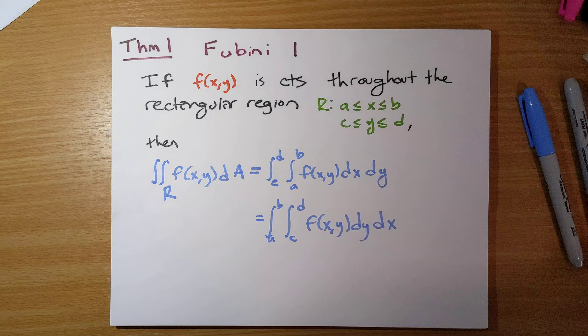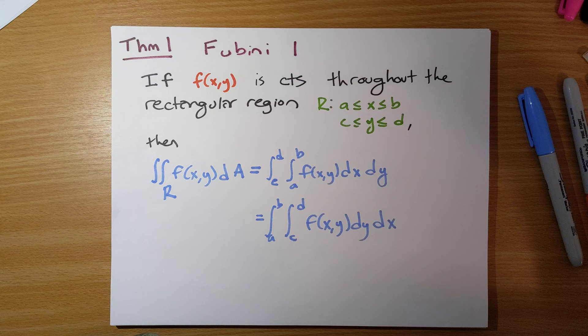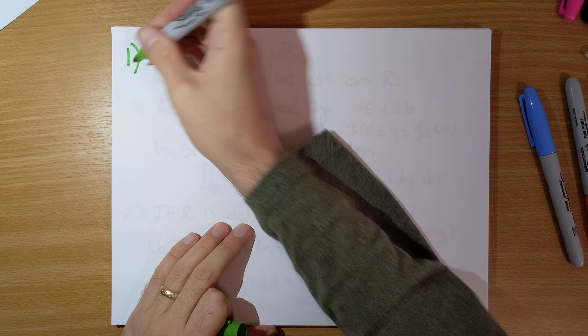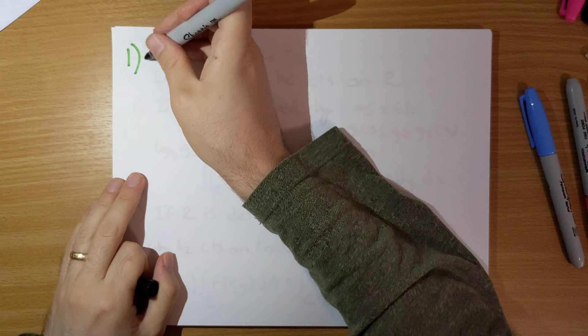But not everything in life is going to be a rectangular box. There isn't too much more to do if all we're doing is integrating over rectangular boxes. The much more interesting thing is what happens when we have more general regions — that's the name of the game here. We're going to break things into two cases.